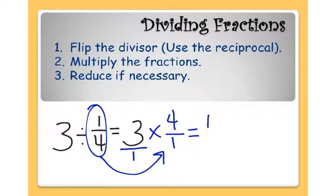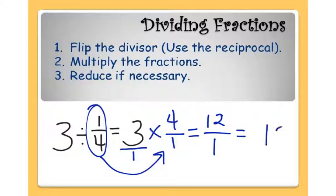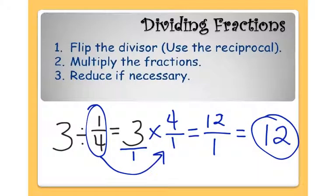So 3 times 4 is 12, and 1 times 1 is 1. In final form, 12 divided by 1 is 12. That's my final answer: 3 divided by 1 fourth is 12.